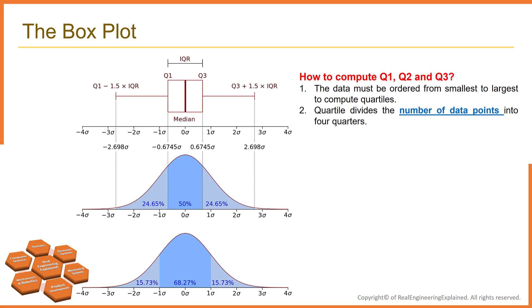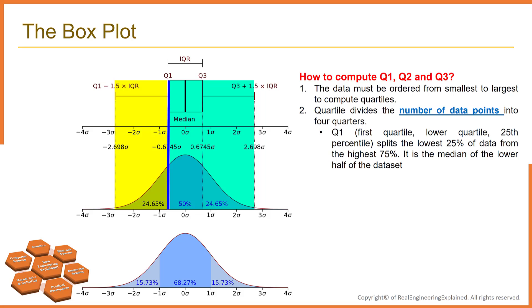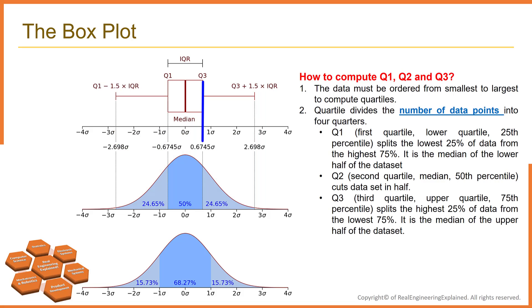So the question is how to compute Q1, Q2, and Q3. First, the data must be ordered from smallest to largest to compute quartiles. Quartiles divide the number of data points into four quarters. The Q1, which is called first quartile, lower quartile, 25th percentile, splits the lower 25 percent of data from the highest 75 percent. It is the median of lower half of the dataset. Q2, or so-called second quartile, median, or 50th percentile, cuts data set in half. Q3, or so-called third quartile, upper quartile, 75th percentile, splits the highest 25 percent of data from the lowest 75 percent. It is the median of upper half of dataset.